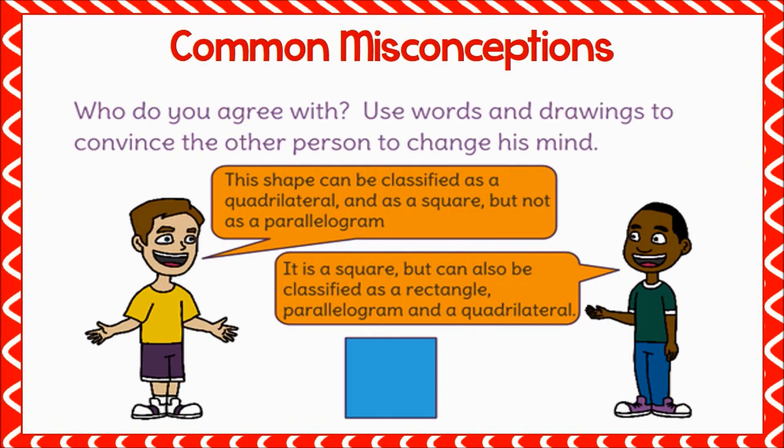Students may believe that because a shape has four sides it is a quadrilateral, and if all sides are the same length it is a square — but fail to recognize that it also has two sets of parallel sides, so it can be classified as a parallelogram. Students may not recognize that a shape can belong to more than one category. It is important to show students examples of shapes with multiple classifications and to discuss how the attributes of subcategories are inclusive of larger categories.